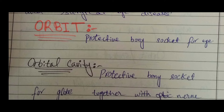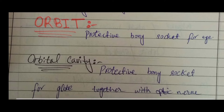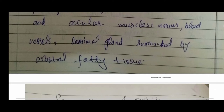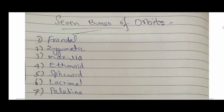The orbital cavity is a bony socket for the globe of the human eye. It protects the human eye and is composed of the optic nerve, ocular muscles, blood vessels, nerves, lacrimal glands, and fatty tissue surrounding the cavity. There are seven bones of the skull that make up the orbital cavity: the frontal bone, zygomatic bone, maxilla, ethmoid bone, sphenoid bone, lacrimal bone, and palatine bone.